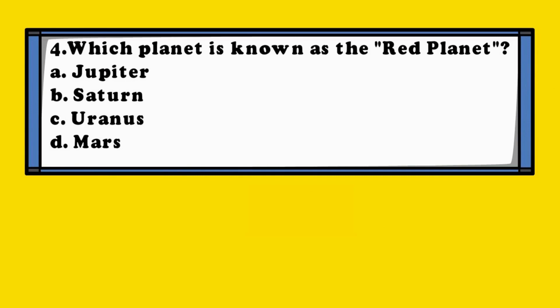Question 4. Which planet is known as the Red Planet? A. Jupiter, B. Saturn, C. Uranus, D. Mars.